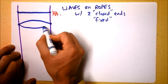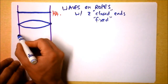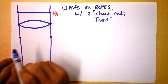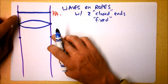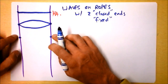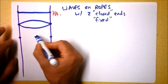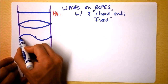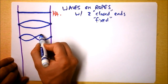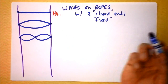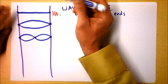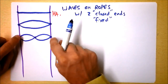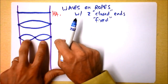The next possibility is I've got a node here and a node here, and a slightly higher energy system might have one more node right smack in the middle. So then it would go up, then down, then up again — that's the next possibility. So here we've got just one node, here we've got two nodes and an antinode, and here we've got three nodes and two antinodes.